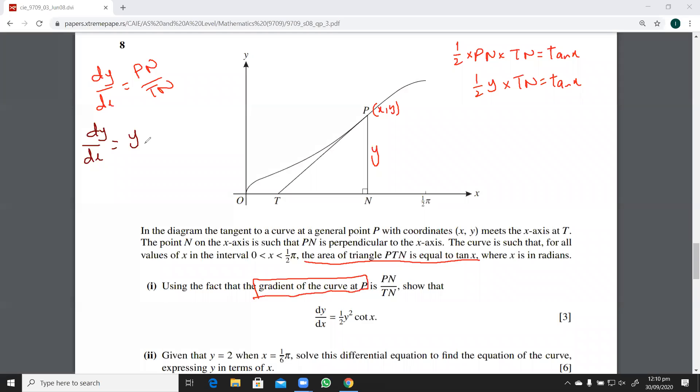Now we can take out the value of TN from here. This TN is 2 tan x over y. Since this is in the denominator, I will be writing its reciprocal here, that is going to be y over 2 tan x. So we get dy/dx that is half y squared cot x. So we have shown, we have got these three marks.